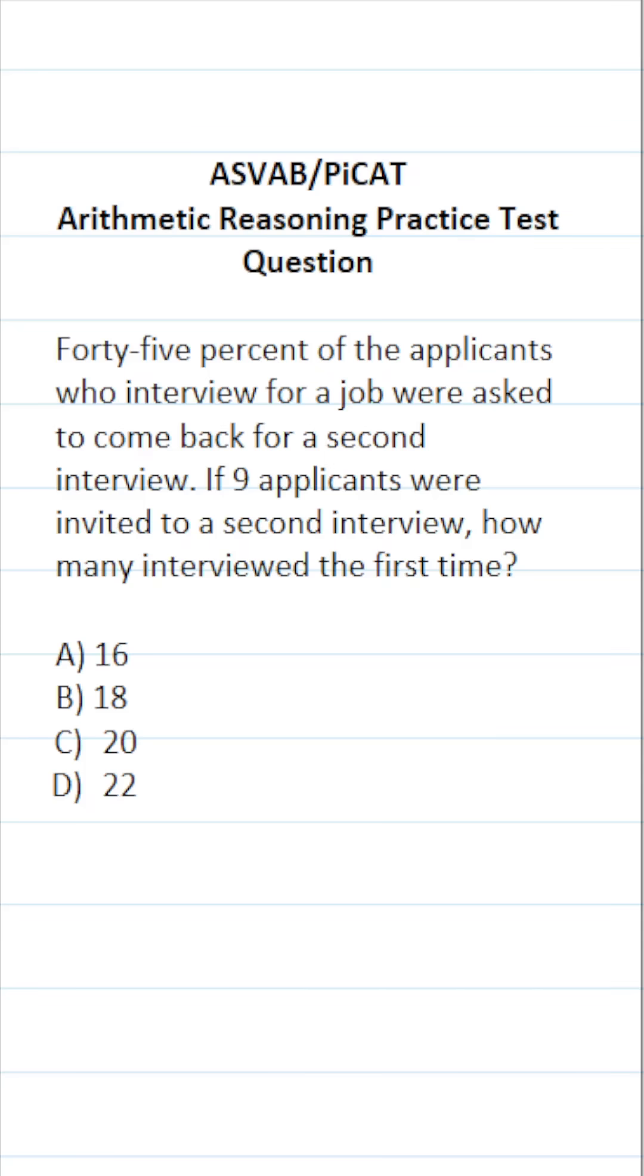In order to answer this question, we have to translate these statements into an equation that we can then solve. Let's start right here. 45%. We're going to use the decimal equivalent of 45%, which is 0.45. So that's the first part of our equation.